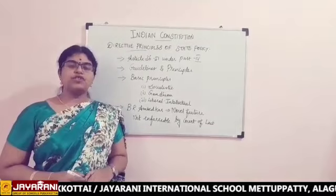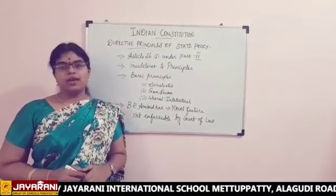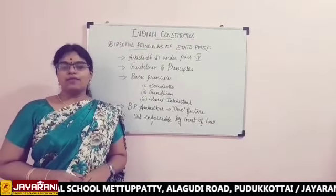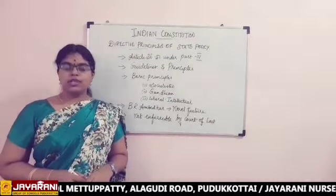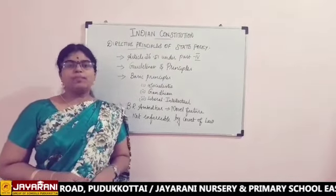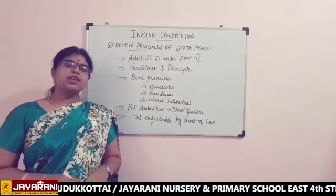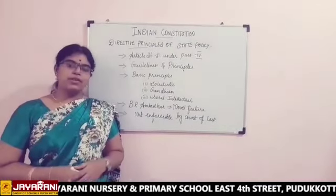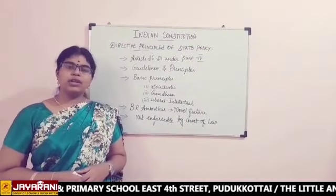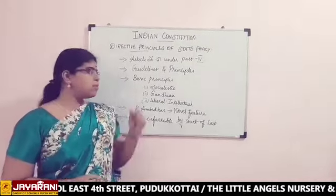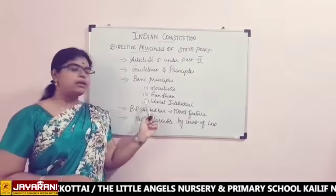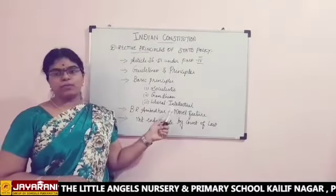Let's move on to Directive Principles of State Policy. Articles 36 to 51 under part 4 of the Indian constitution deal with Directive Principles of State Policy. They provide guidance and principles to the government to govern the nation. They can be broadly classified into 3 principles: Number 1, Socialist. Number 2, Gandhian. Number 3, Liberal intellectual.